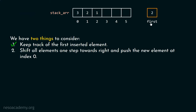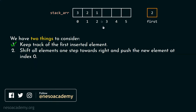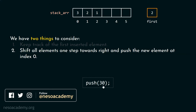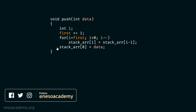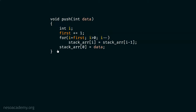The variable first stores the index of the first inserted element. Currently, first is holding index 2, meaning the first inserted element is at index 2. After this, we have to shift all elements one step towards right and push the new element at index zero. Let's say we want to push element 30 into the empty stack. For this purpose we use the push function, and I will explain each step. This push function receives the data — we know data is 30.